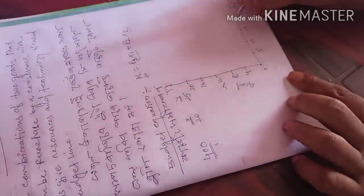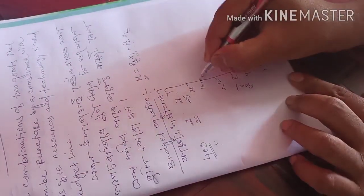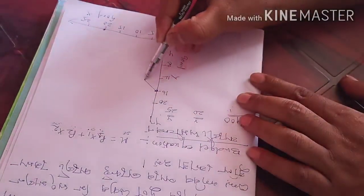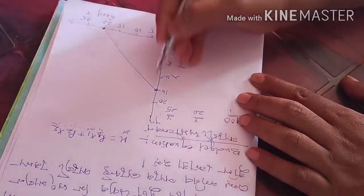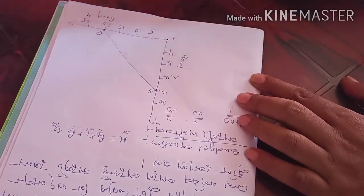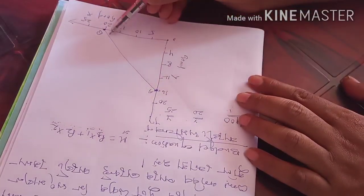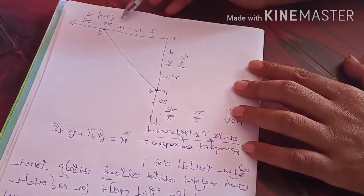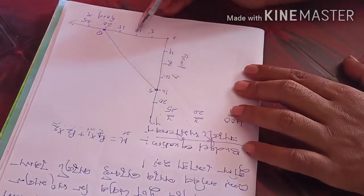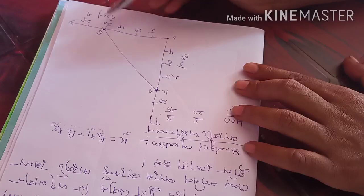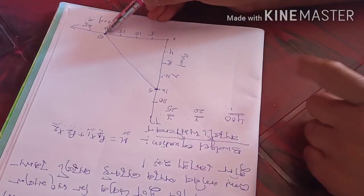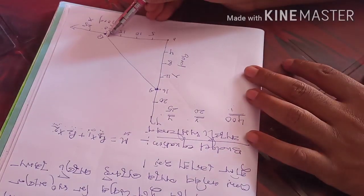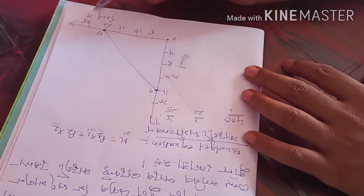We can purchase maximum 20 of X and 16 of Y. If you join these two points — 16 on the Y-axis and 20 on the X-axis — then we will get a line which will be known as the budget line. Suppose it is AB. AB is the budget line. Now, the budget line is downward sloping. Why is it downward sloping? Because if you want to purchase one commodity more, then you have to sacrifice another commodity. If you want to purchase more of X, then you have to sacrifice more of Y, because your budget is limited — you have only 400 rupees. That's why the budget line is downward sloping.